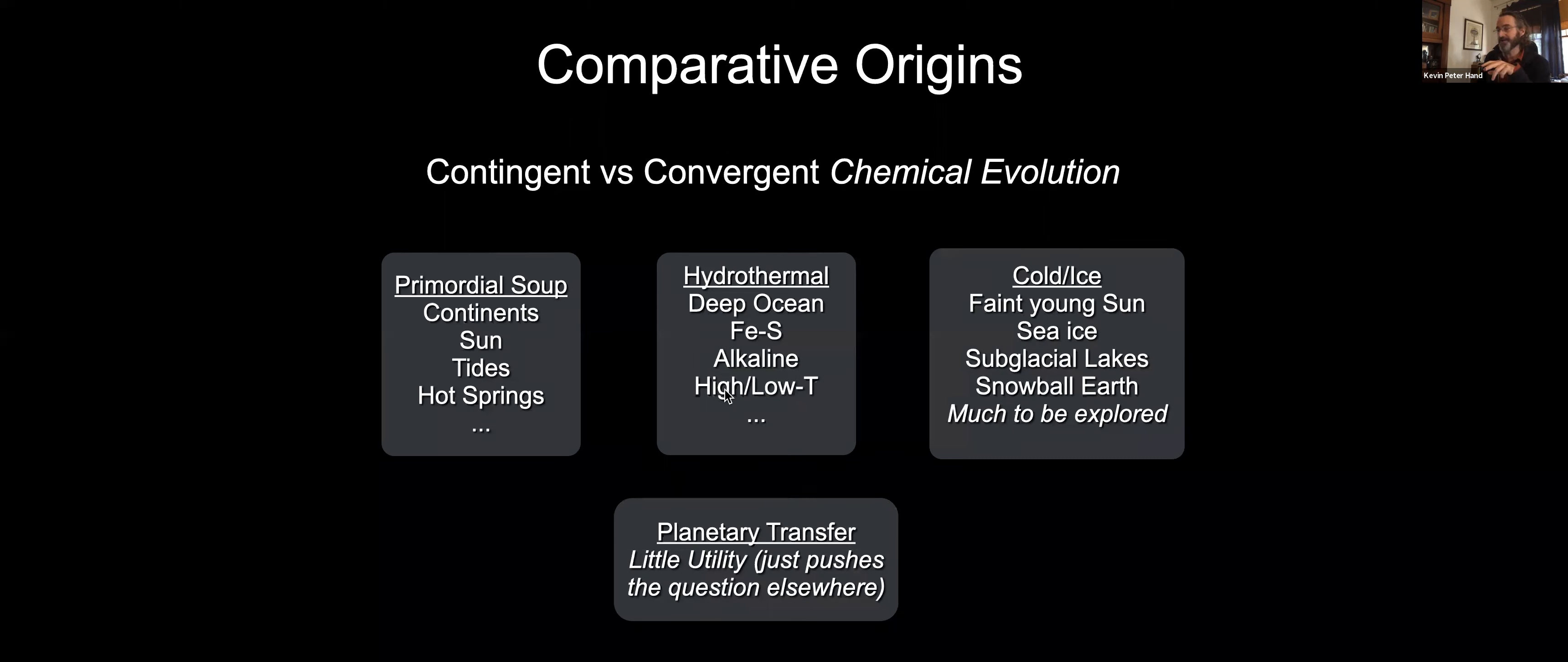Part of the early attraction to hydrothermal vents was the black smoker chemistry of pyrite and other iron sulfur minerals that provide a nice catalyst for organic synthesis. And the iron sulfur chemistry of black smokers is typically at these higher temperature hydrothermal vents. The primordial soup contingent, the folks who argue for tide pools and continents, say that there's no way life could originate at a hydrothermal vent because you've got this problem of too much water.